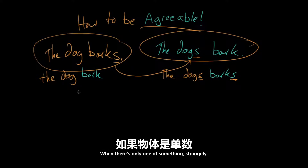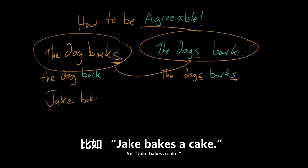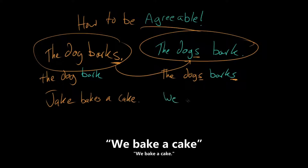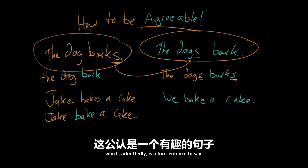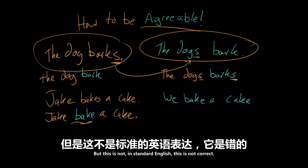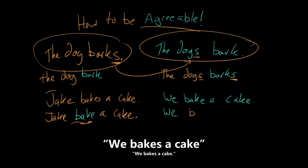When there's only one of something, strangely, in the present tense, it takes this S. So Jake bakes a cake. We bake a cake. But this is not, in standard English, correct. It doesn't exhibit what we call agreement. Similarly, you also wouldn't say we bakes a cake.